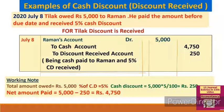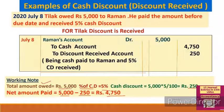Example: Tilak owes Raman rupees 5,000. He paid the amount before the due date and received 5% cash discount. Calculate discount: 5,000 × 5% = 250. Net cash paid = 5,000 − 250 = 4,750. Also remember: trade discount is not shown in books, but cash discount is shown in books.